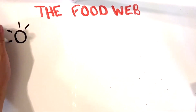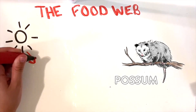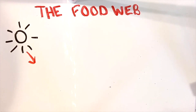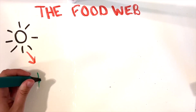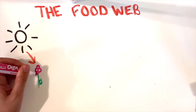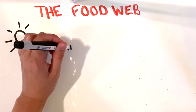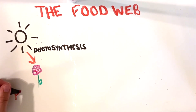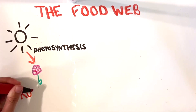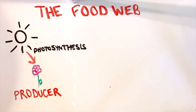All living things need energy to survive, and this energy begins from the sun. Flowers and other plants take in the nutrients from the sun through a process called photosynthesis. Because plants take energy from the sun and make it into their own food, plants are called producers in the food web.